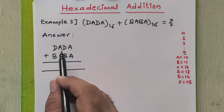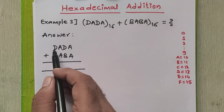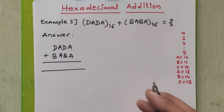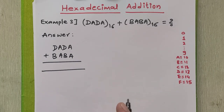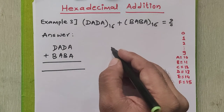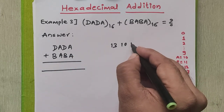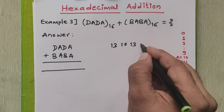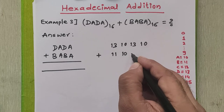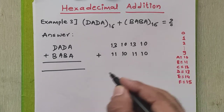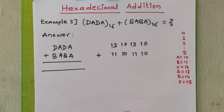To solve this example, we will first see what D, A, and B are in hexadecimal. We will replace all these alphabets with their decimal digit equivalents and then normally perform the addition. D in hexadecimal is 13, A is 10, D is 13, A is 10, plus B is 11, A is 10, B is 11, A is 10. We have replaced all these alphabets with their hexadecimal digit values.